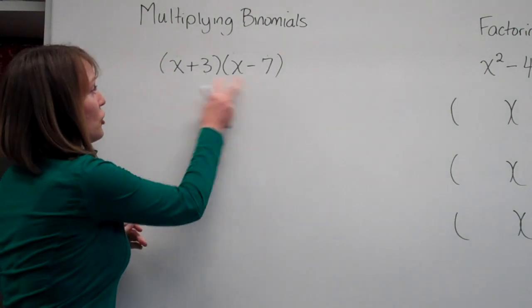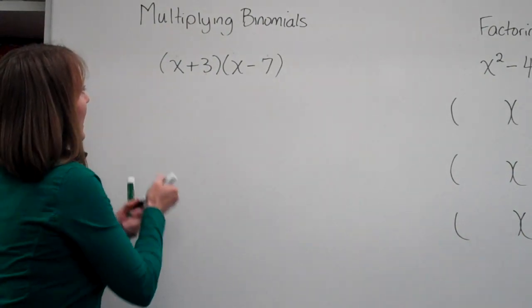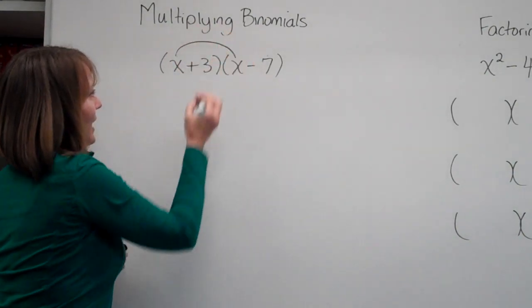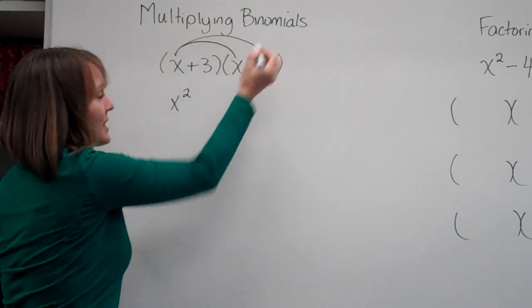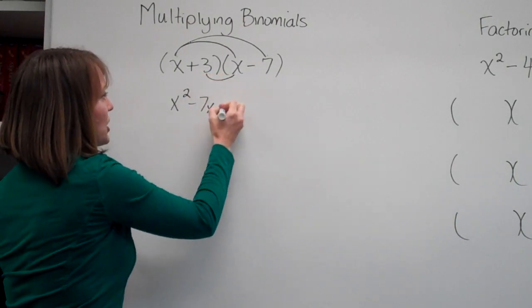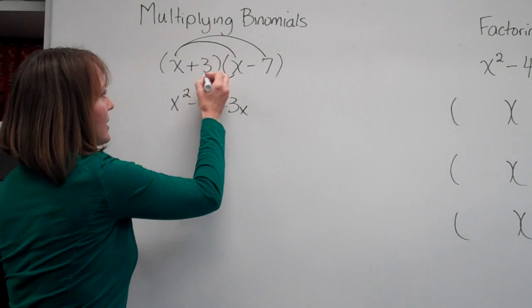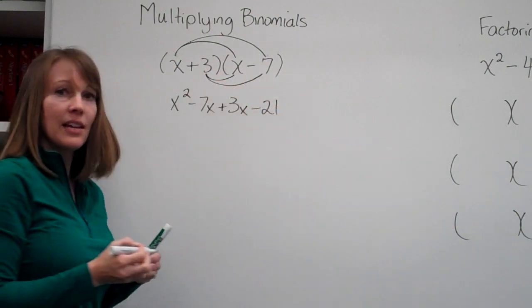Recall that when we had two binomials multiplied together, we started out by multiplying x times x to give us x squared, we multiplied x times negative 7 to give negative 7x, we multiplied 3 times x which gave us positive 3x, and 3 times negative 7 which gave us negative 21.